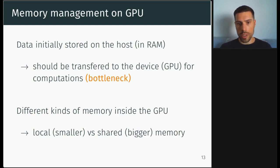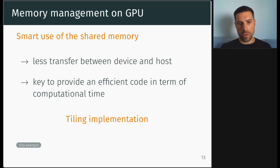So on GPU, there are two steps in the management of the memory. First, the data is initially stored on the host in the RAM of your computer, and it should be transferred to the GPU to do the compilation. So that is a bottleneck because the link between the RAM and the GPU is not that fast. Inside the GPU, you have different kinds of memory, some that is local to each computing unit, some that is shared. And actually, if you want to do a fast computation, the key is to use the shared memory smartly to reduce the number of transfer between the host and the device. So to do that, in KeOps, we have a tiling implementation. I don't have time to detail it here, but I have joined an example in the slides, so you can get the slides online and check it to understand better.